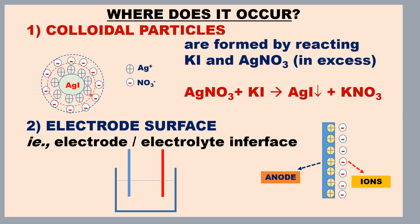Why are colloidal particles stable? Because they are charged. Silver iodide is precipitated as a colloid. Since silver ion is in excess — silver nitrate is in excess and completely dissociated — silver ion gets adsorbed on the surface of the colloidal particles. As a result, the silver iodide colloidal particle has acquired a positive charge.